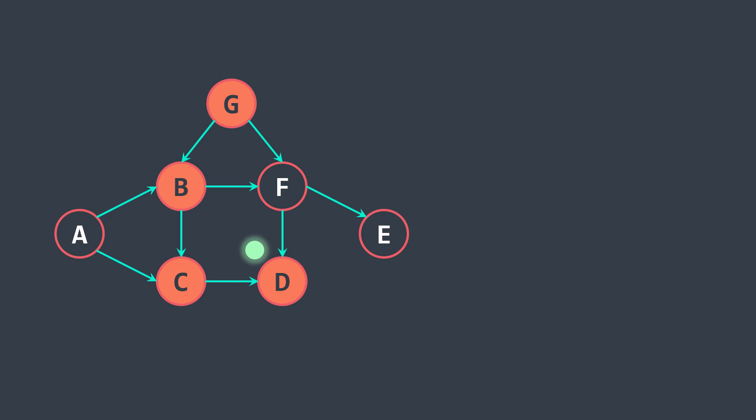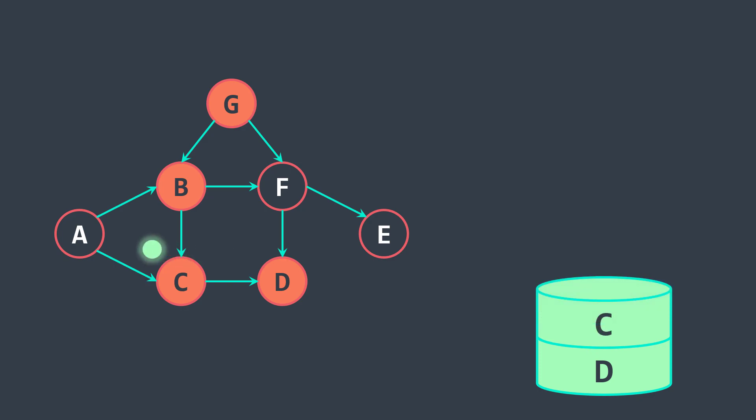Now D has no neighbor, so we already finished traversing its neighbors, we can push it onto the stack, and we backtrack. We visited all the neighbors of C, so we push it and we backtrack.